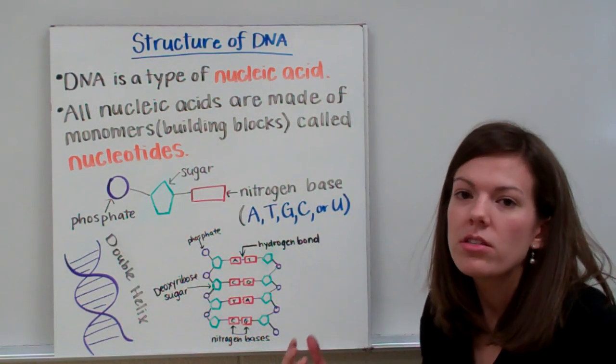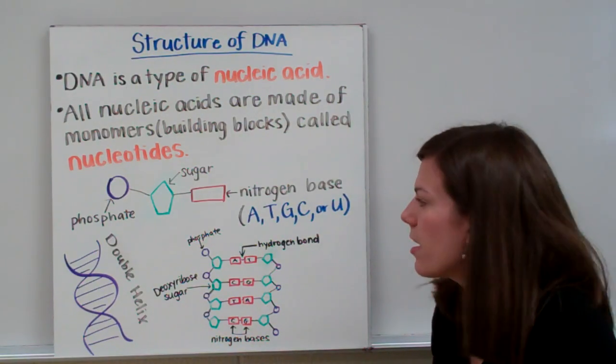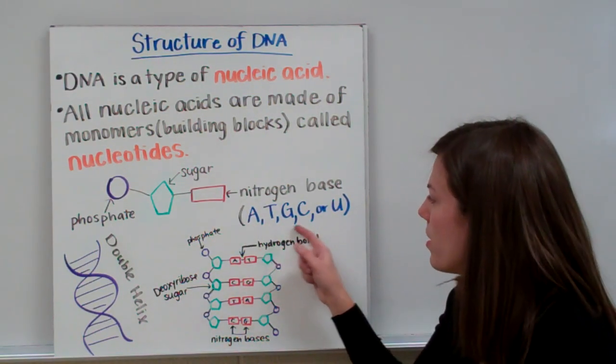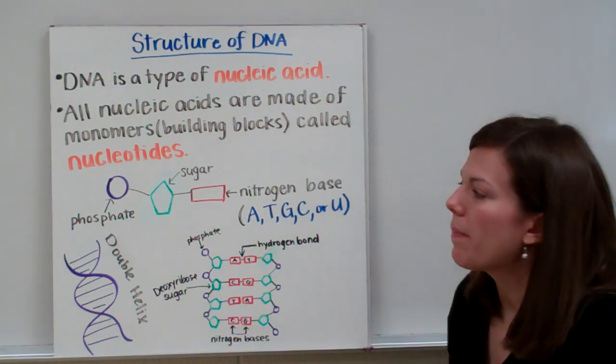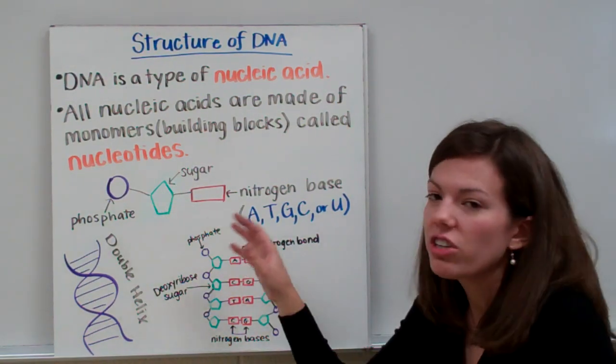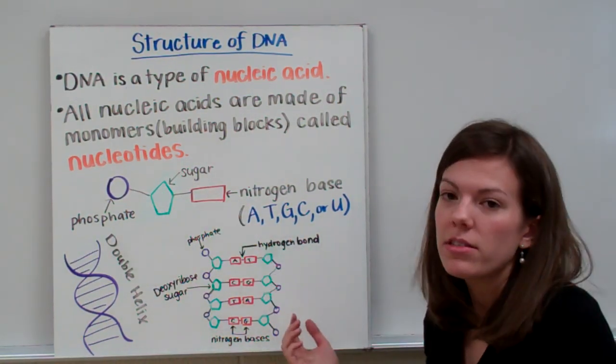The thing that makes your DNA different from my DNA is we have a different arrangement of these nitrogen bases in our DNA. We have the same phosphate and sugar on the side but our nitrogen bases are different.